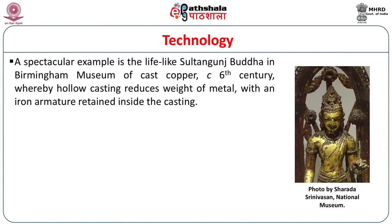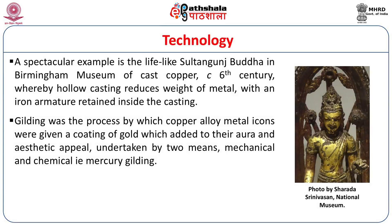A spectacular example of a Gupta-era image is the lifelike Sultan Ganj Buddha in the Birmingham Museum, almost entirely of cast copper, made by the hollow casting process with the iron armature retained inside the casting. Another process which came popularly into vogue with Buddhist images, particularly in Eastern India, was gilding, by which copper alloy metal icons were given a coating of gold to add to their aura and aesthetic appeal. This was undertaken either by mechanical means or by chemical means of mercury amalgam application followed by burnishing, resulting in a layer of gold on the image, used quite widely across India but especially for Buddhist images and in the Indo-Tibetan and Nepalese region.